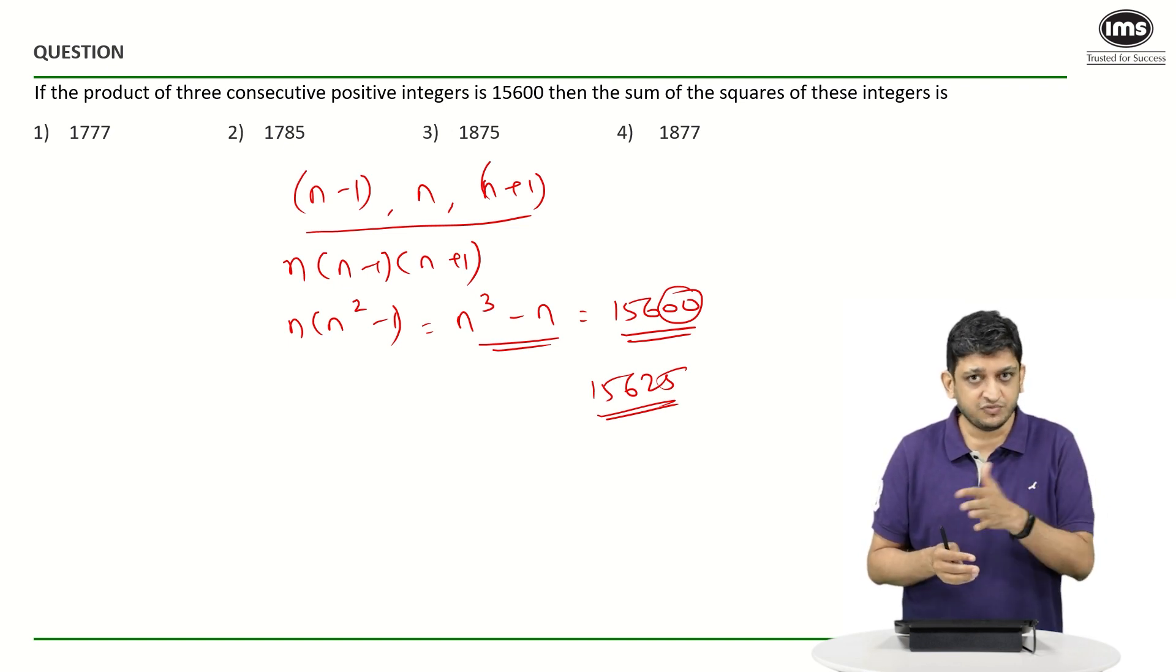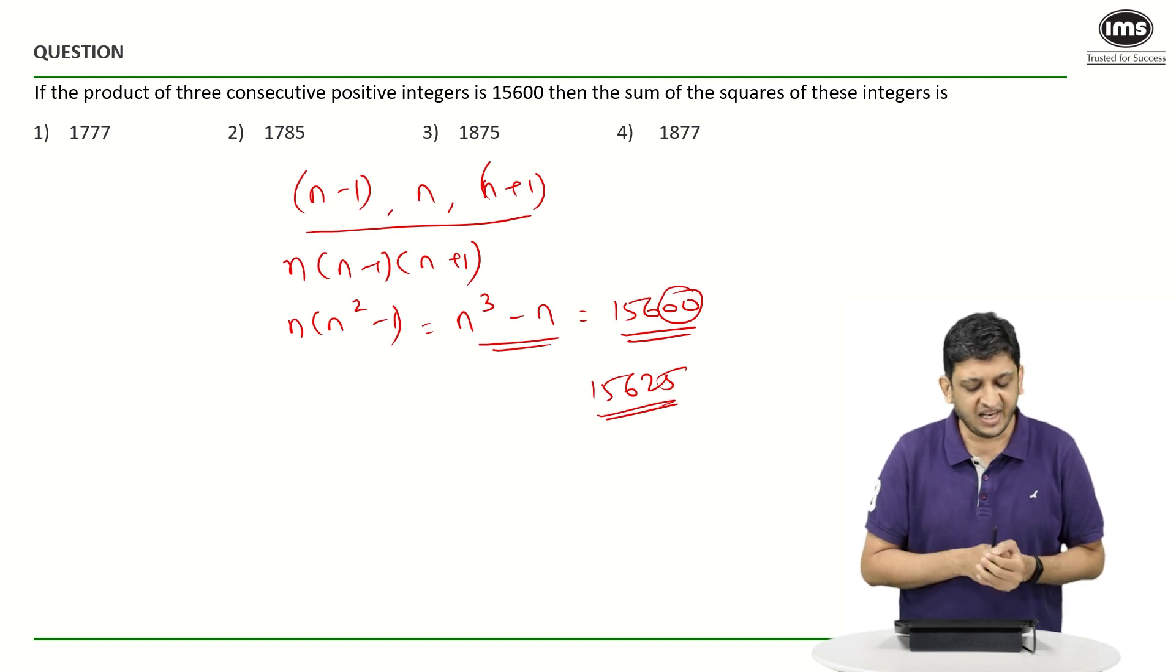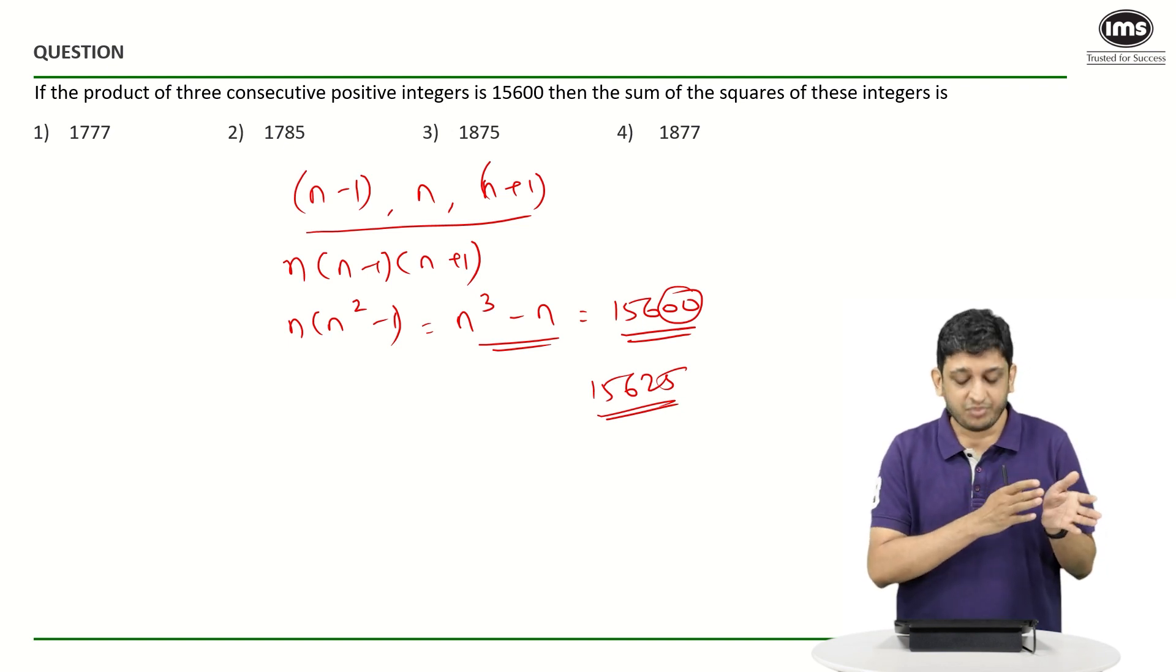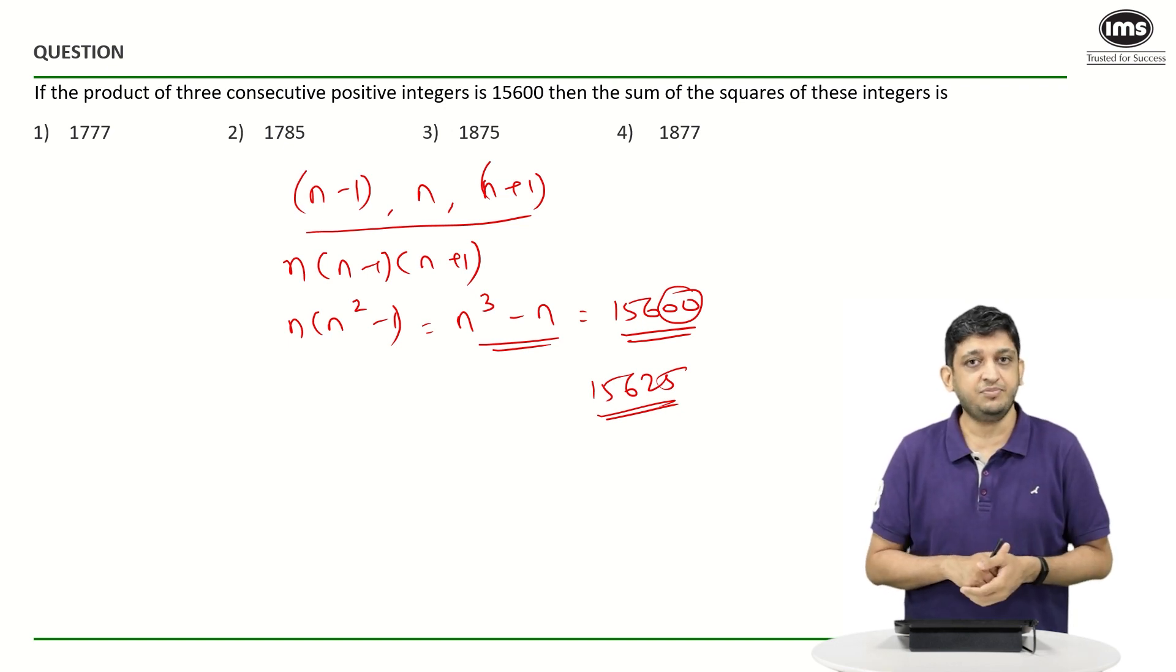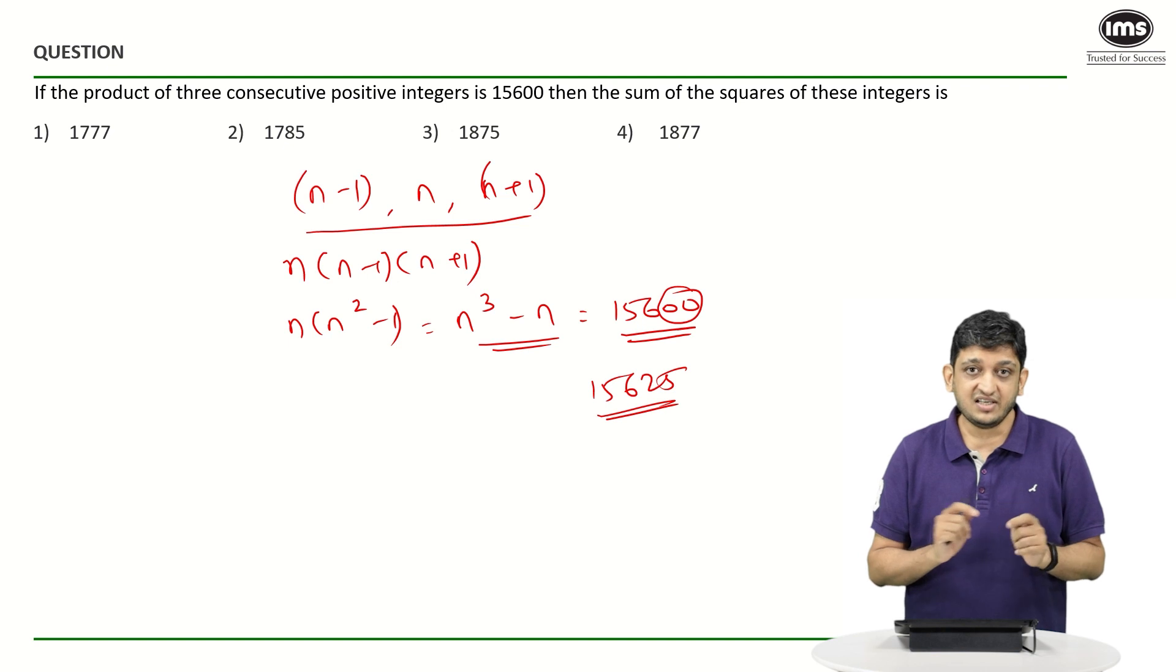Why do we do that? Because 25³ is close to 15600, and we also know that for the product to be ending in two zeros, we need to have a 25 as a part of the product.